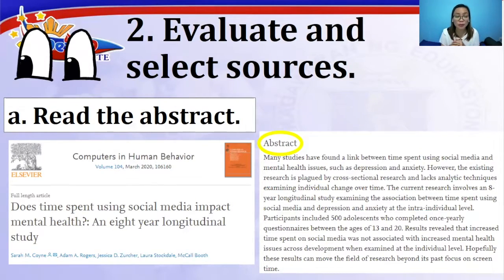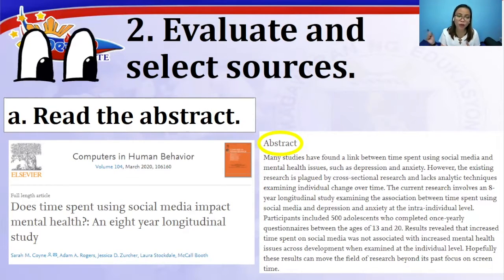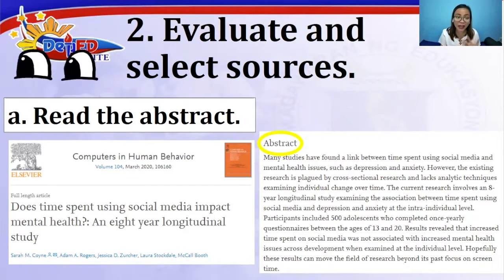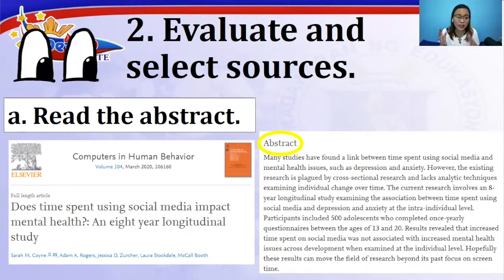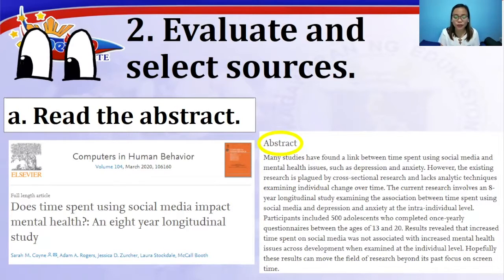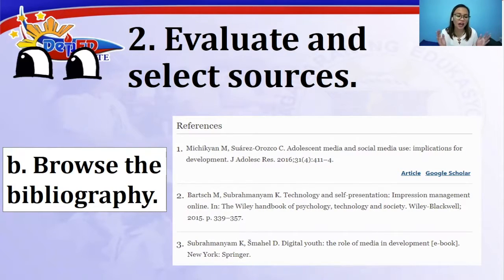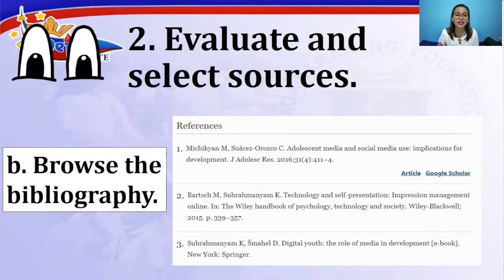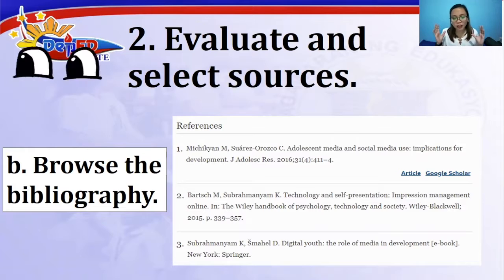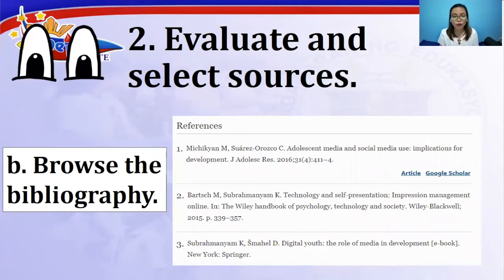First, read the abstract — the part of a research paper that summarizes the whole study. There you can see the rationale, why the research was conducted, the results, and the conclusion. Once we read the abstract, we can decide if it should be included in our literature review. Second, browse the bibliography — at the latter part of every research paper we can find the references the author used, which could also be helpful in our study.